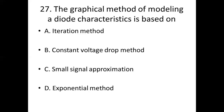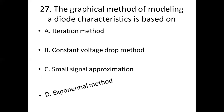Twenty-seventh bit. The graphical method of modeling a diode characteristic is based on dash. Option A: iteration method. Option B: constant voltage drop method. Option C: small signal approximation. Option D: exponential method. Answer: Option D, exponential method.